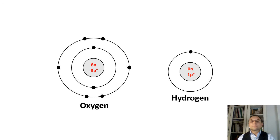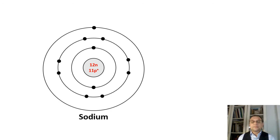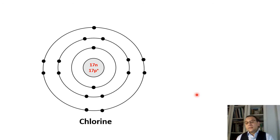Let's take a look at sodium. How many protons does sodium have? All you have to do is count the electrons — you see 11 electrons, therefore there are 11 protons within the nucleus of sodium, and there are 12 neutrons. For chlorine: 17 electrons and therefore 17 protons.